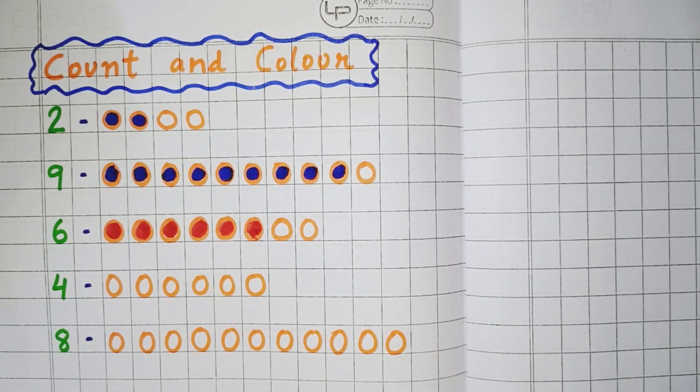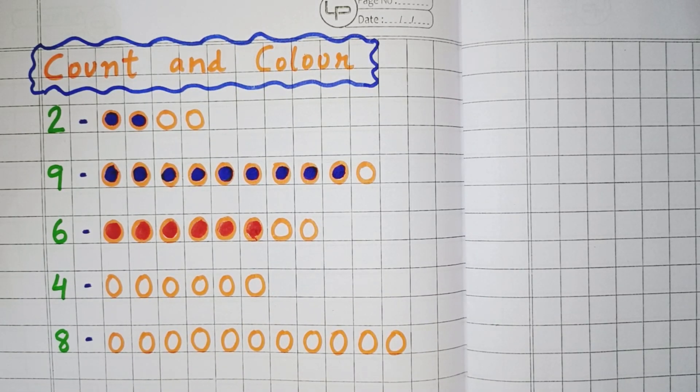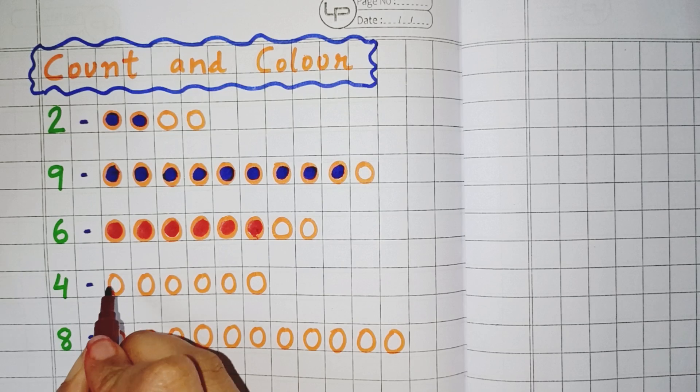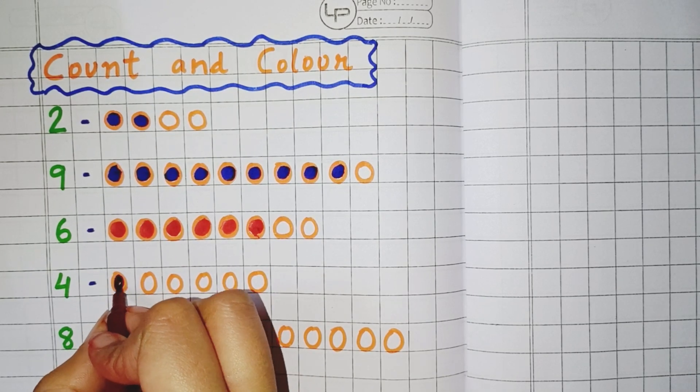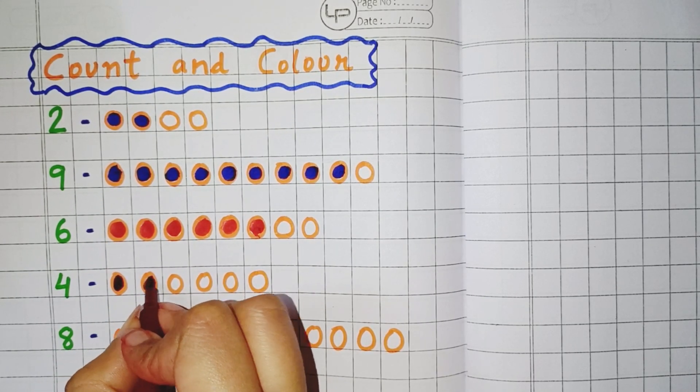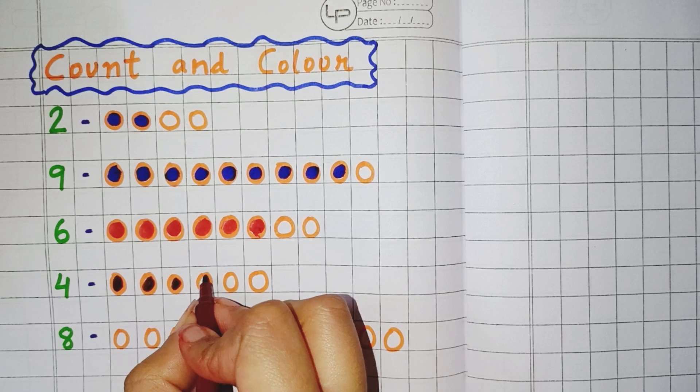Now the next number here is 4. So we have to count and color 4 objects. 1, 2, 3, 4.